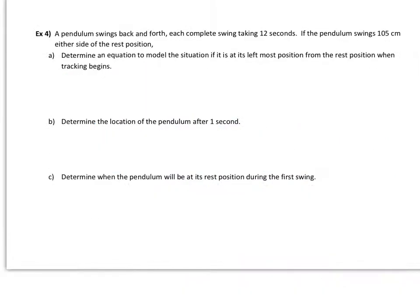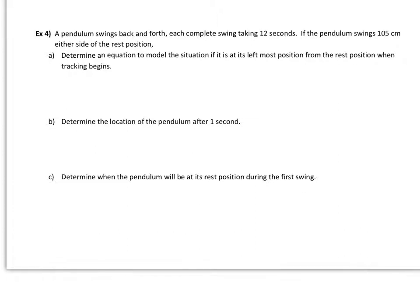Alright, let's look at the last example. The pendulum swinging back and forth, this reminds me of a person sitting on the swing. Think grandfather clock and the big pendulum, this is an extra big pendulum. It's taking 12 seconds to make one complete swing, and it's swinging 105 centimeters on either side of the rest position. So the rest position would be hanging straight down, perpendicular to the horizontal, and it's going 105 centimeters to the left and 105 centimeters to the right of that perpendicular line.